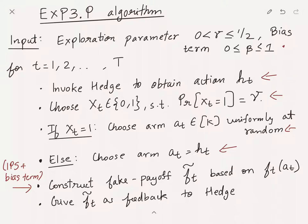We construct this fake payoff vector ft tilde to give it to Hedge. The payoff vector is where the algorithm is being modified. The payoff is created by having this IPS plus bias term which you just saw before, and then give ft tilde as feedback to Hedge. The modification is very simple, a very tiny seemingly tiny modification, but that is all that is needed to get what we want.